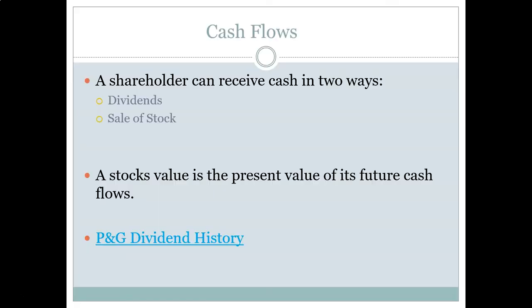The first way is dividends. Part of the rights conferred on a shareholder by the company is a proportional share in the profits of the firm, and that share comes in the form of a dividend. A dividend is the owner's share of the company's profits, and those cash flows are paid to shareholders regularly. The other way a shareholder can receive cash is by selling the stock — receiving the value of the stock at some future point, which is the present value of all remaining dividends from that point forward.